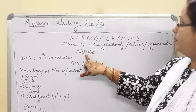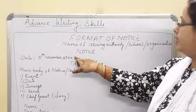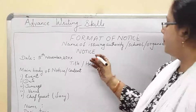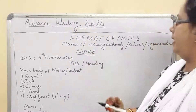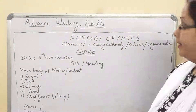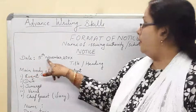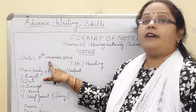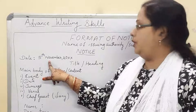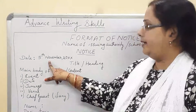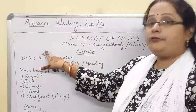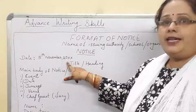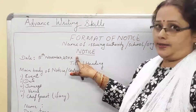After 'NOTICE' in block letters, which needs to be underlined, comes the date. The format for writing the date: you are not allowed to write '5.11.2020'. You are not allowed to write it in that form. You need to write '5th November, 20XX'.